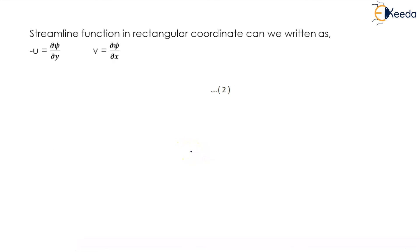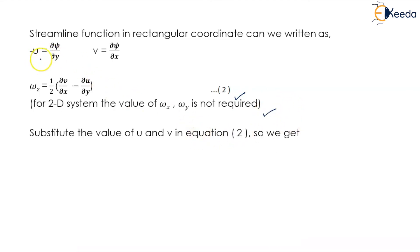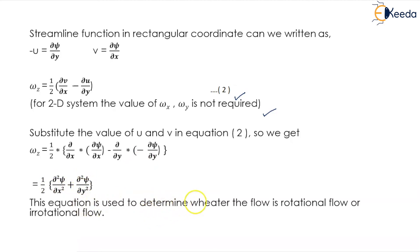Streamline function in rectangular coordinates can be written as u = −∂ψ/∂y and v = ∂ψ/∂x. Again, ω_z = (1/2)(∂v/∂x − ∂u/∂y), and this is equation number 2. For a two-dimensional system, ω_x and ω_y are not required. Substituting u and v into equation 2, we get ω_z = (1/2)[∂/∂x(∂ψ/∂x) − ∂/∂y(∂ψ/∂y)] = (1/2)(∂²ψ/∂x² + ∂²ψ/∂y²).